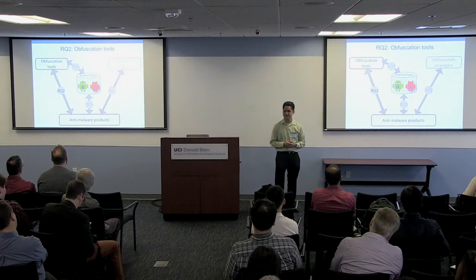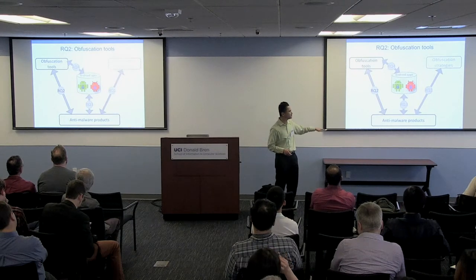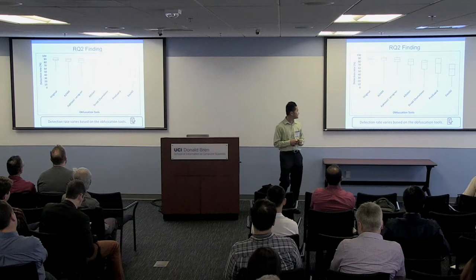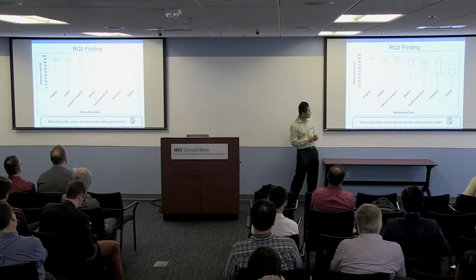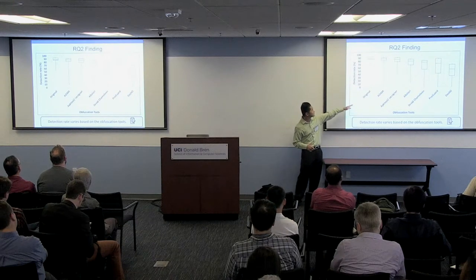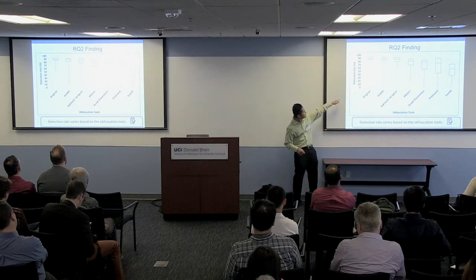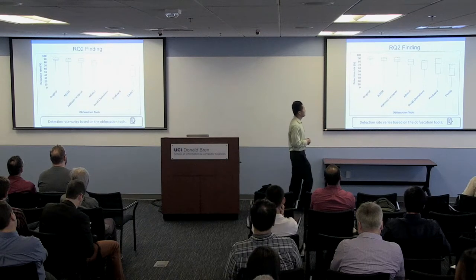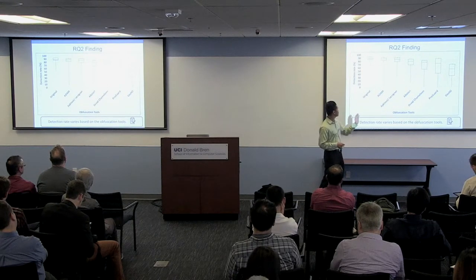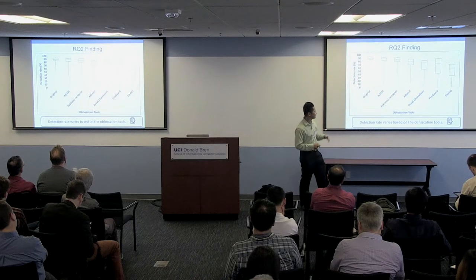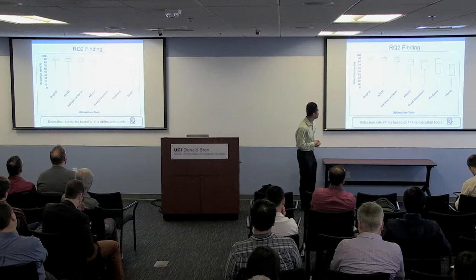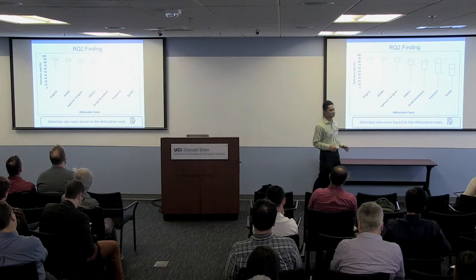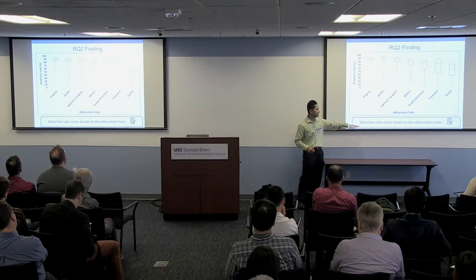Moving to research question two: the effects of obfuscation tools on commercial anti-malware products. This chart shows box plots for each of the seven obfuscation tools plus the original apps, with detection rate on the y-axis. The tools on the right most affect detection rate — ProGuard and DASHO are notably impactful — while tools like Atom and APKTool/Jarsigner affect detection rates the least. Overall, detection rate varies based on the obfuscation tool used.